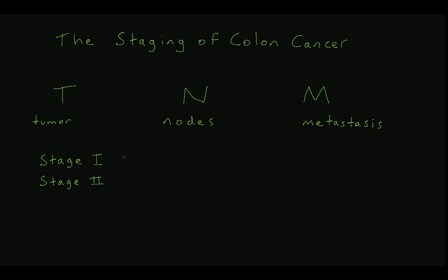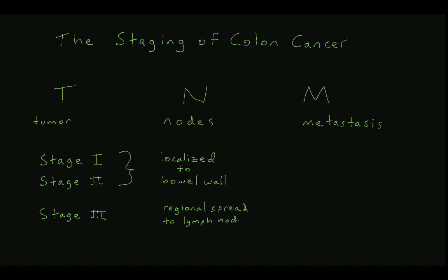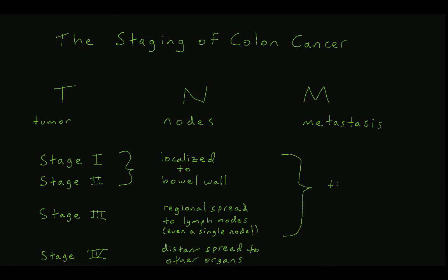Stage 1 and 2 disease are localized to the bowel wall. Stage 3 disease involves regional spread to the draining lymph nodes. The presence of nodal disease in even a single lymph node immediately upstages a cancer to stage 3, which has important implications on the adjuvant treatment of colon cancer. Stage 4 disease involves distant spread to other organs or sites. Stages 1 through 3 are indications for a surgical resection. Stage 4, except for select instances with isolated metastatic disease to the liver or lungs that could potentially be resected to downstage the cancer, is typically treated medically with chemotherapy.